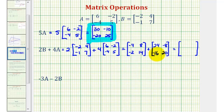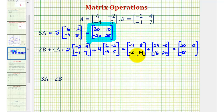Now to add the two matrices, we'll add the corresponding elements. Negative four plus 24 is 20. Eight plus negative eight is zero. Negative two plus negative 16 is negative 18. So this would be two B plus four A.